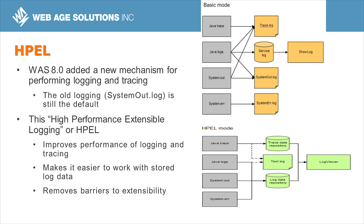WebSphere 8.0 and 8.5 have a new optional logging framework called HPEL — High Performance Extensible Logging. The old SystemOut.log is still the default until you switch a server to HPEL mode. The framework provides better performance logging and tracing, and tools to filter and search log records, plus a Java interface for writing custom log analysis tools. By default, HPEL stores data in a binary format with no text log, though you can enable one — but you get the best performance by leaving it disabled and using the extraction tools when needed.